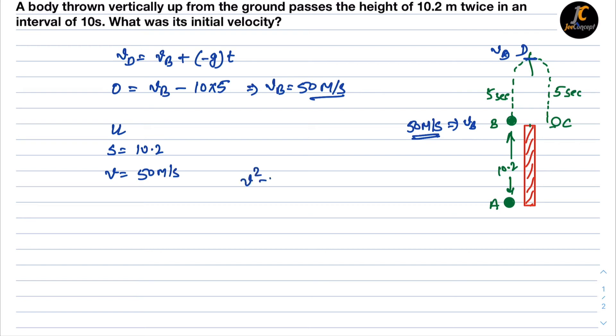So we can use the equation as v² minus u² equals 2as. Now v is 50², minus u which we have to find out, is equal to 2 into a is g which is in negative direction, that is minus 10, into s is 10.2.